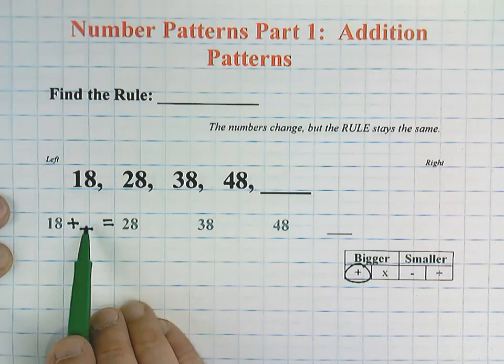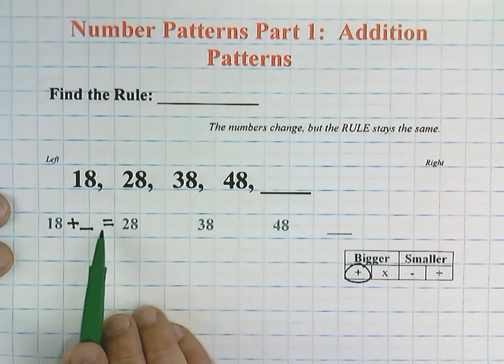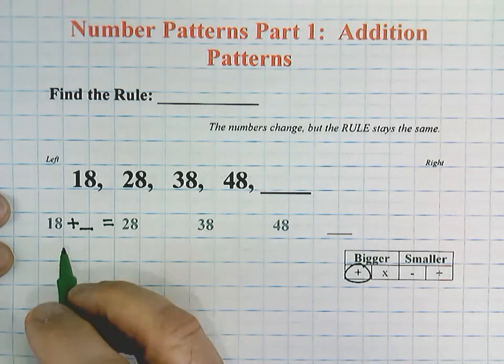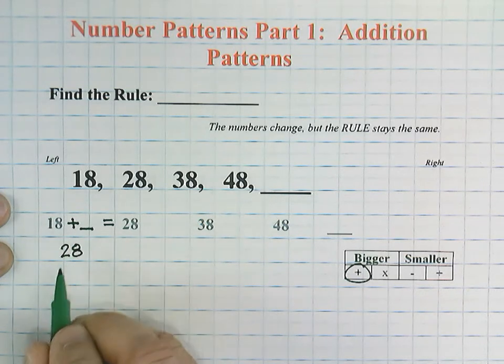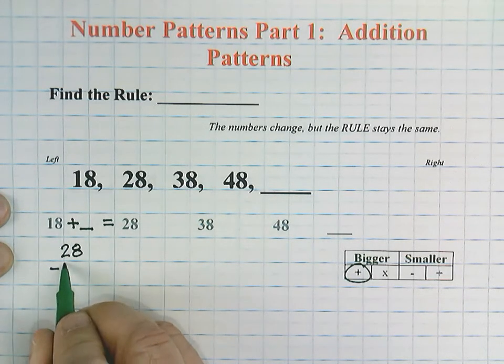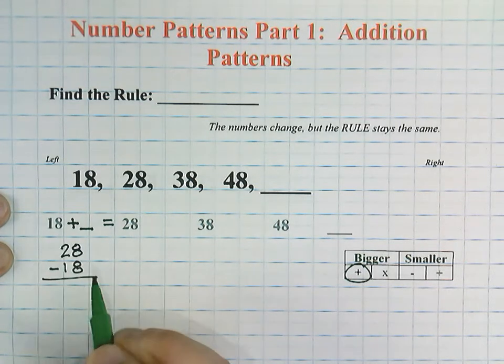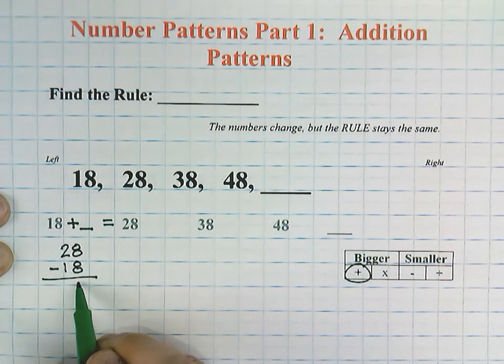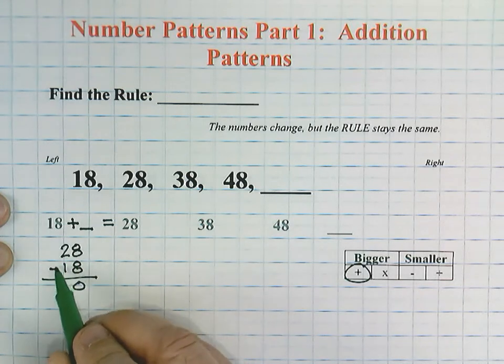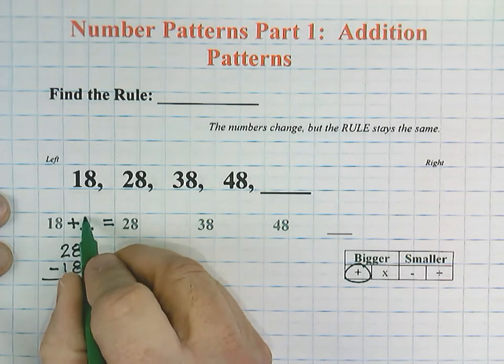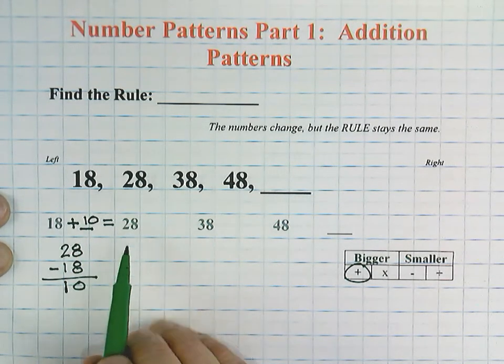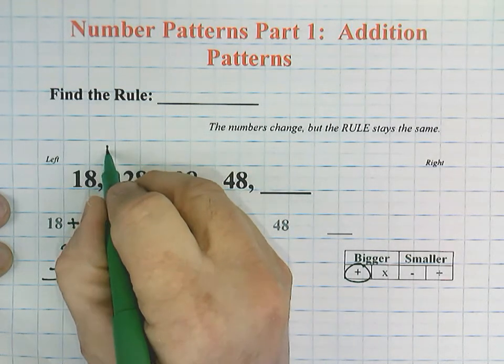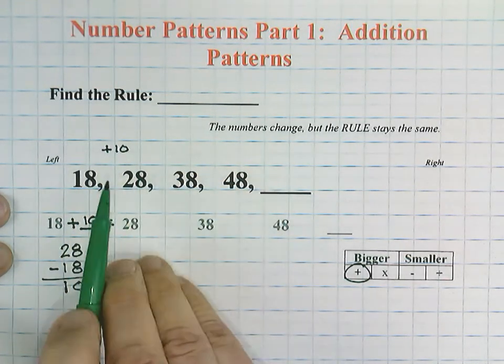Our job is to solve for that blank. We can use related facts. We can say 28 minus 18. Take away 8 would be 0, and 2 minus 1 would be 1, which gives us 10. So 18 plus 10 equals 28. I'm going to write plus 10 up here. Our rule is plus 10.